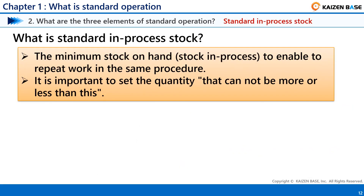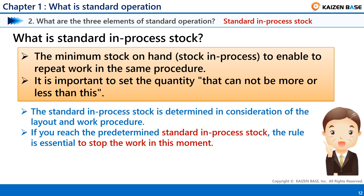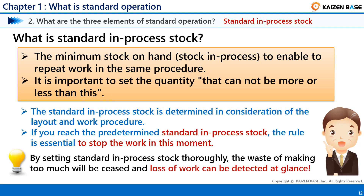The third element is Standard In-Process Stock — the minimum stock on hand, or stock in process, needed to repeat work in the same procedure. It is important to set the quantity that cannot be more or less than this. Standard In-Process Stock is determined in consideration of the layout and work procedure. If you reach the Standard In-Process Stock, it is essential to stop the work. You should never produce more than the Standard In-Process Stock, even though waiting may occur. By setting Standard In-Process Stock properly, the waste of making too much will be prevented and loss of work can be detected at a glance. If you make more than Standard In-Process Stock to hide the waiting, the problem will be hidden and improvement will be delayed — so you should never do it.